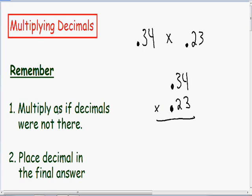So remember our first step. We need to multiply as if the decimals were not even there. So let's multiply these two numbers as if these decimals didn't even exist.